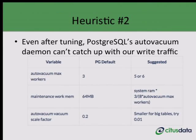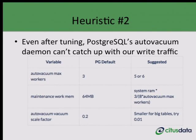A second heuristic that usually applies for OLTP type workloads is auto vacuum. PostgreSQL uses auto vacuum daemons to clean up load caused by MVCC. The default vacuum settings are too conservative, and we recommend that you look into tuning them. If you tune them for your workload and you're still experiencing performance issues related to vacuum, then it may be a good time to start thinking about scaling out.